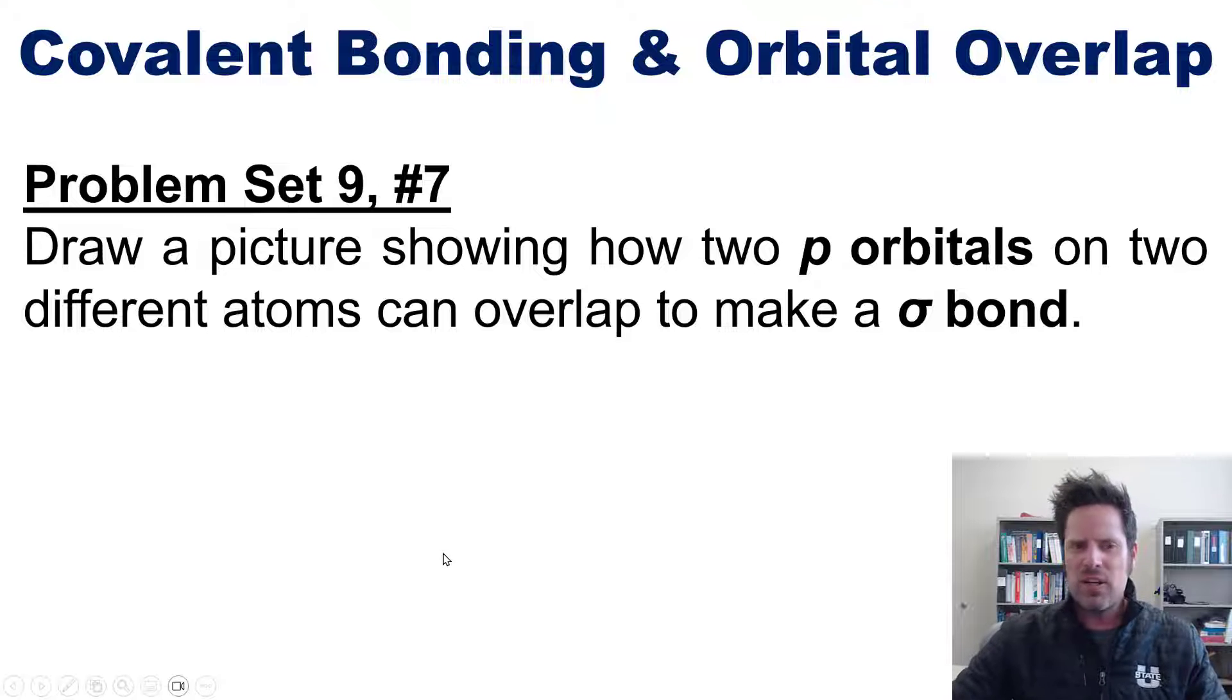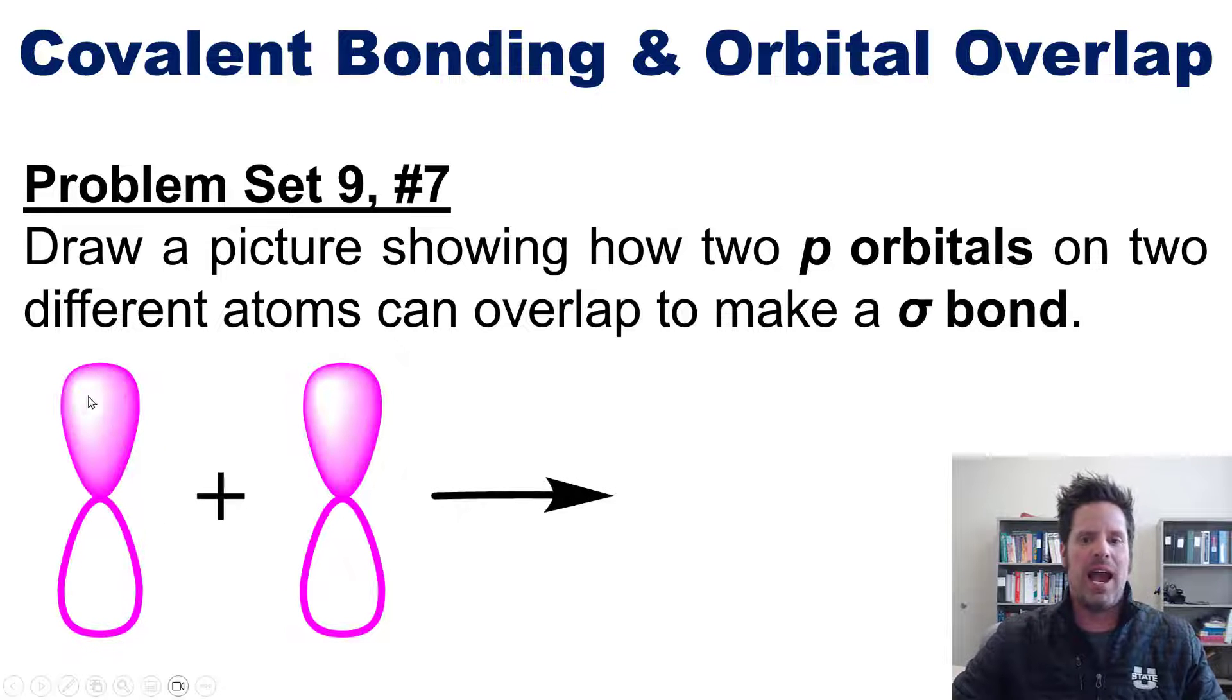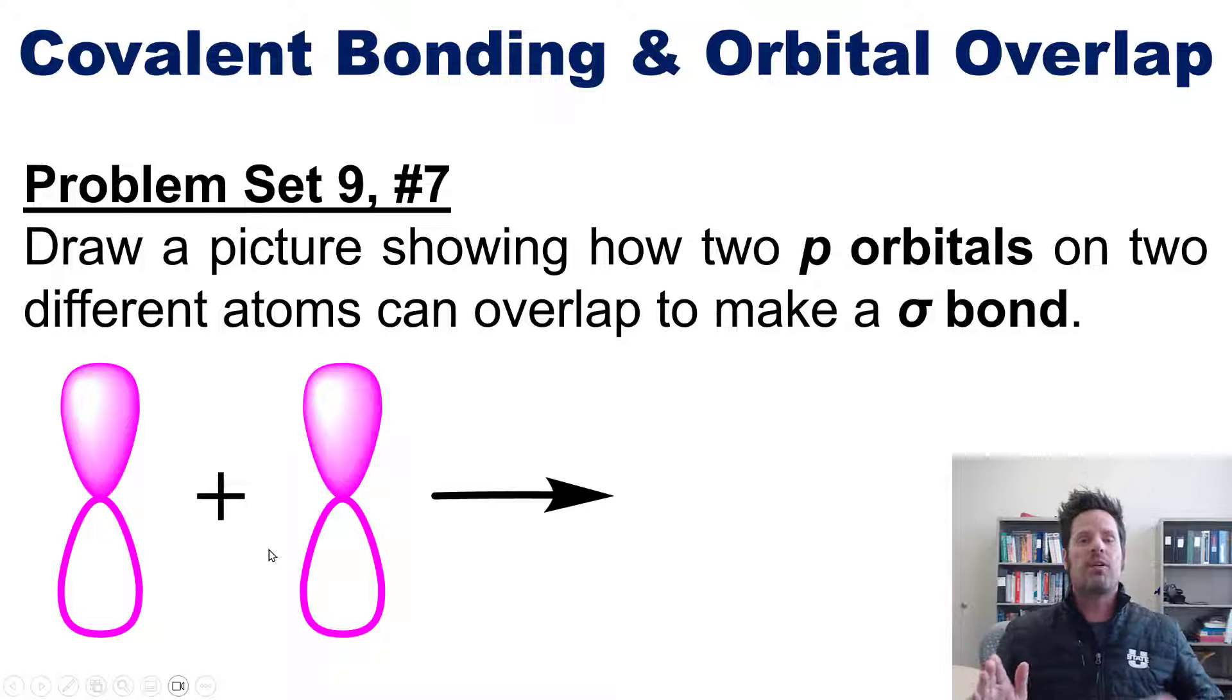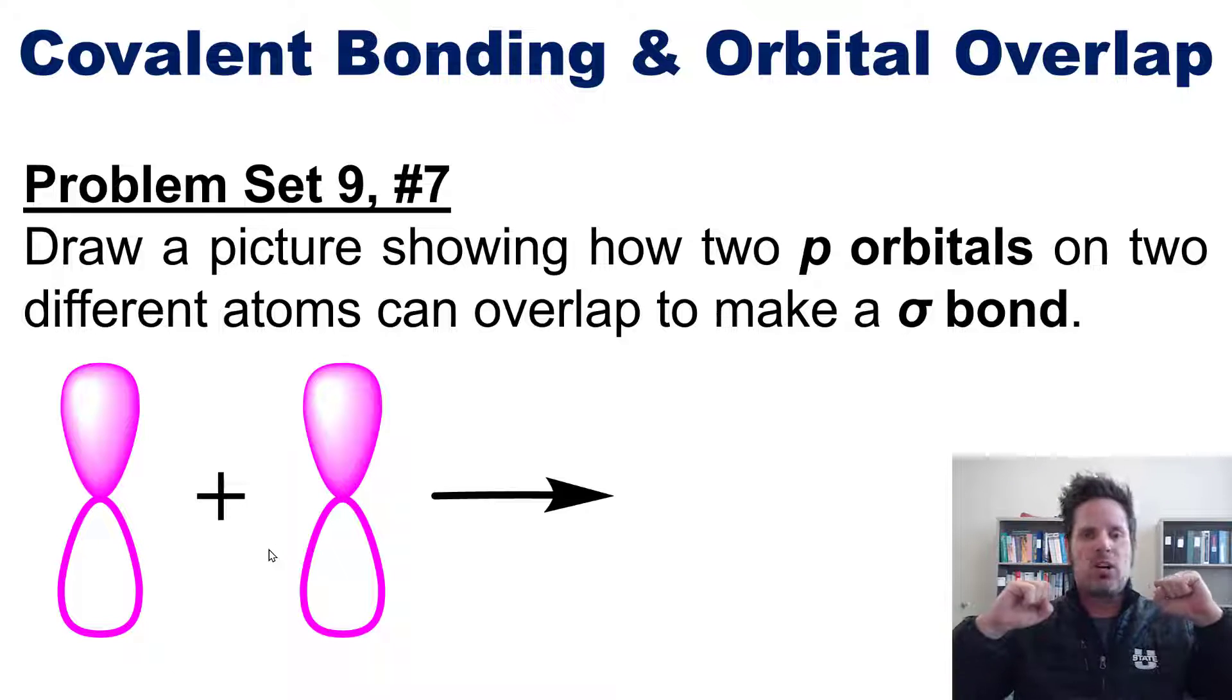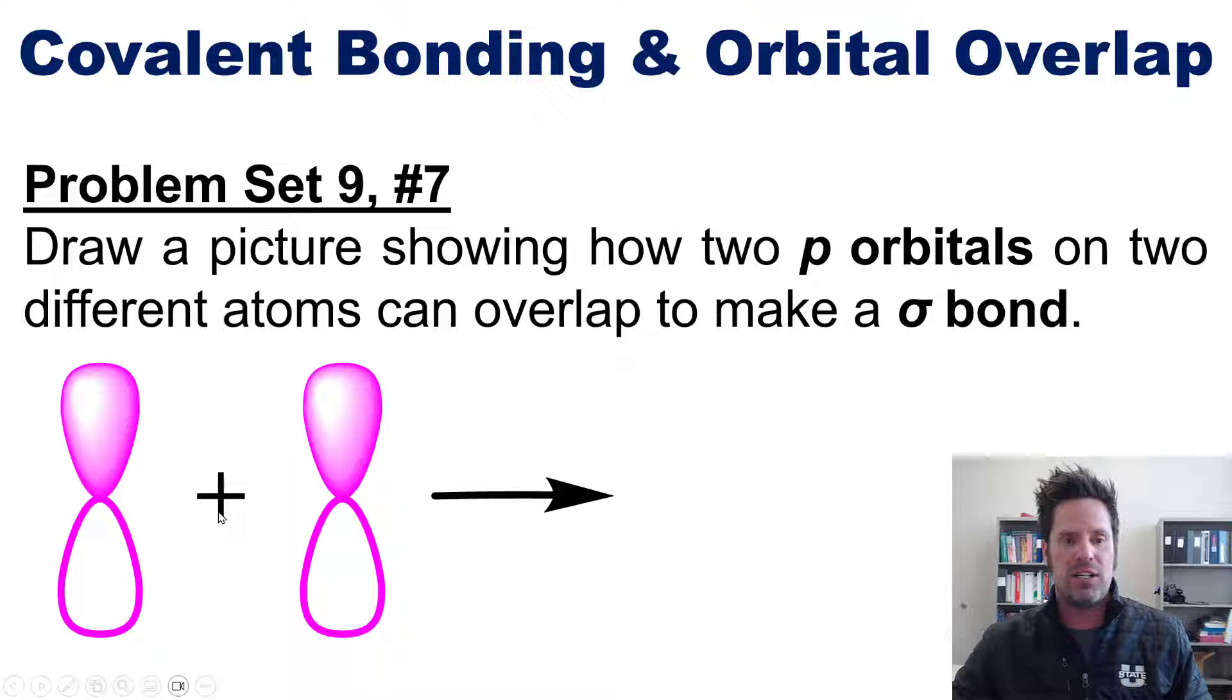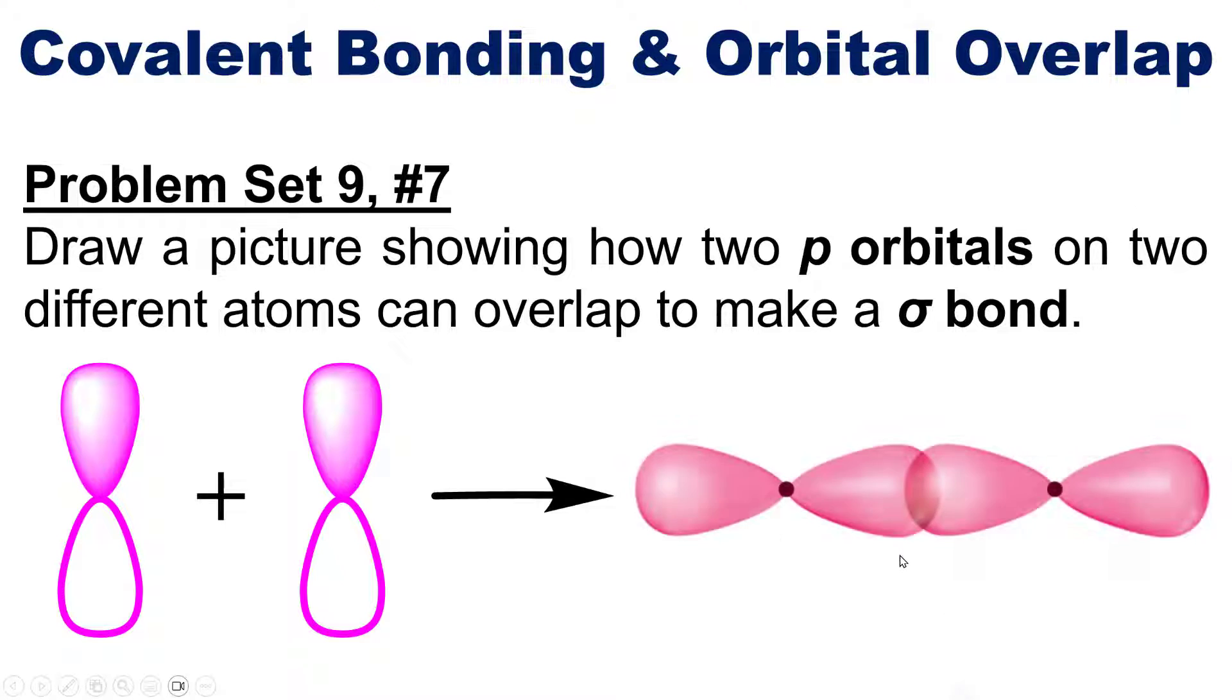All right, so how would I do this? Well, I would just begin by drawing out two generic p orbitals. You could imagine these as each being pz orbitals, that is, p orbitals that traverse the z axis. And I'm not drawing the px's and the py's. When they overlap to form a sigma bond, they do so in a way that kind of looks like this. So if you draw something that looks like this, that's pretty much the answer to this question.